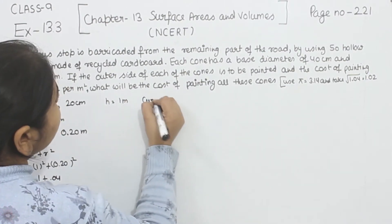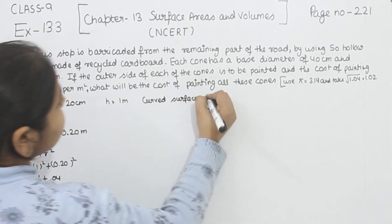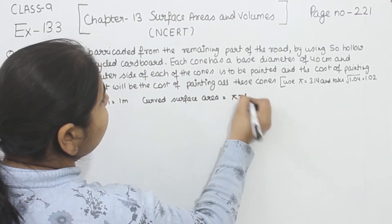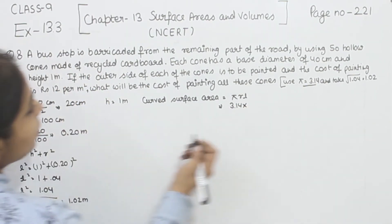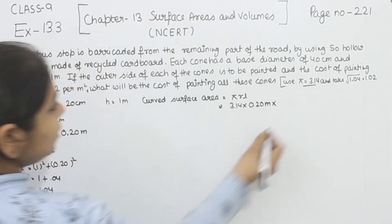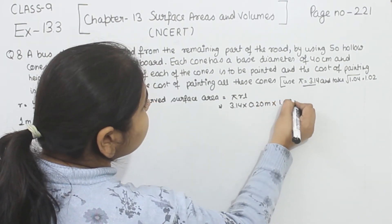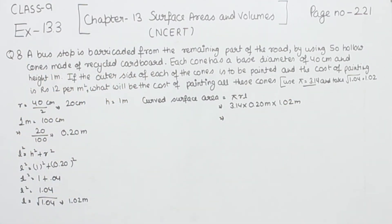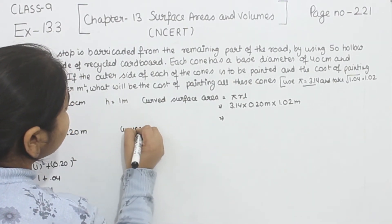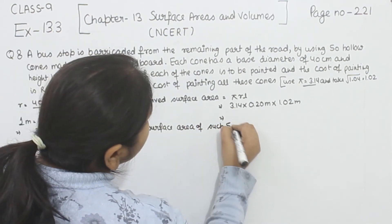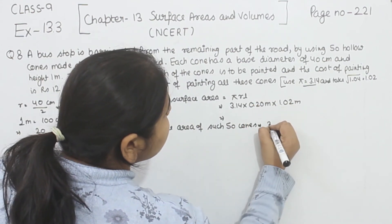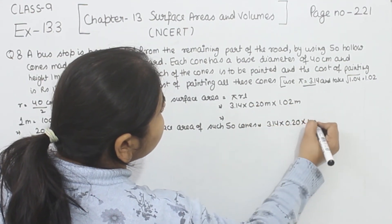Now we have the slant height of the cone. We have to find the curved surface area. The curved surface area is equal to π r l. The value of π is 3.14 as given in the question. The radius is 0.20 meter and l is 1.02 meter. For 50 cones, we multiply by 50: so 50 × 3.14 × 0.20 × 1.02 meter square.